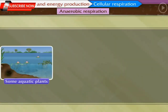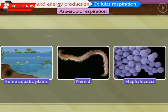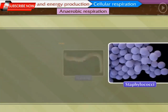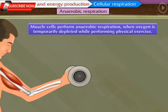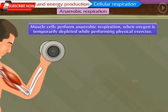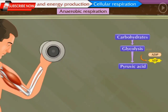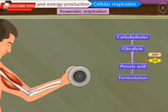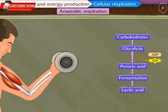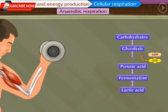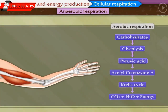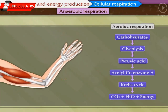Some higher plants, animals, and aerobic microorganisms also sometimes perform anaerobic respiration instead of aerobic respiration when there is depletion in oxygen level in the surroundings. For example, our muscle cells perform anaerobic respiration when oxygen is temporarily depleted during physical exercise. Due to this, less energy is produced and the lactic acid formed accumulates in muscles, causing fatigue. When oxygen levels return to normal, muscle cells again return to aerobic respiration.